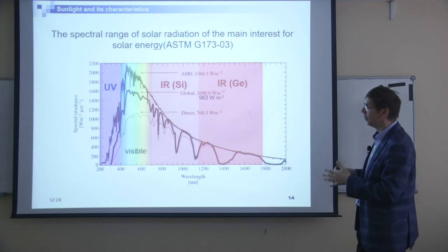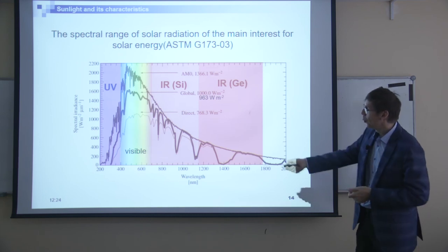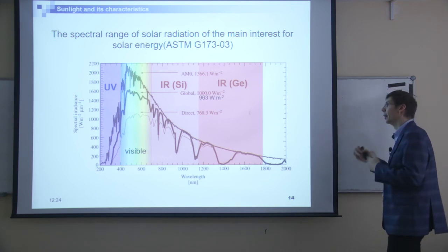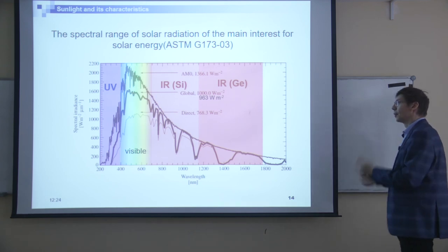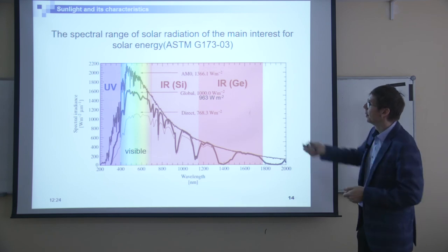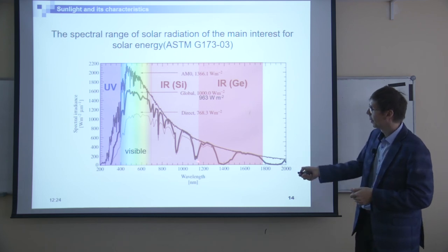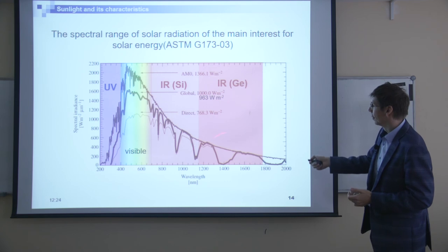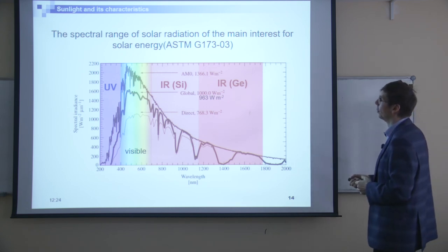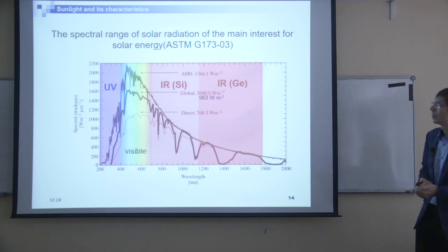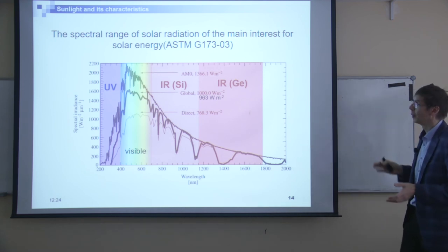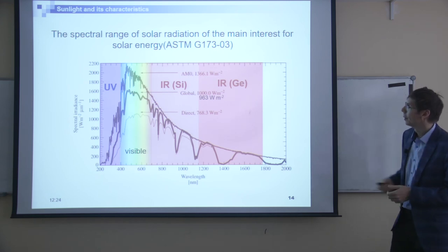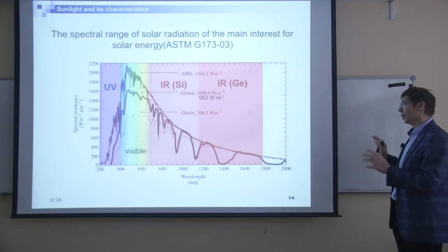If you want to have some idea about semiconductor materials which could convert this light, the area that could be converted by silicon is selected. If you want to convert more photons — for example in the infrared — you can use germanium. Silicon has a band gap of 1.1 or 1.12 eV to be precise, and for germanium it's 0.66 eV — just to have some ideas.